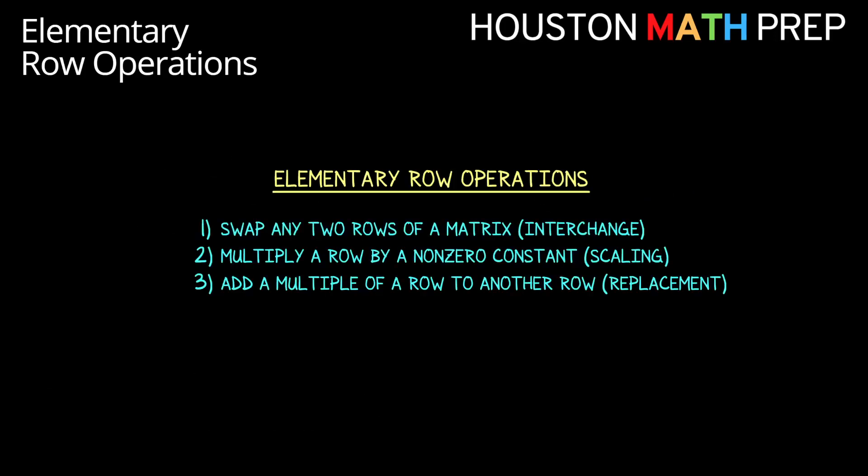So we've got swapping two rows of a matrix, multiplying a row by a non-zero constant, and adding multiples of rows to other rows as our elementary row operations for matrices. Coming up next, our video on the row reduction algorithm shows you how to use these row operations to get your matrix into one of the echelon forms and start solving systems. Thanks for watching everyone, we'll see you in the next one.